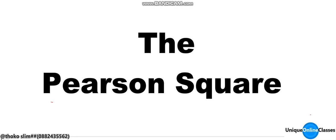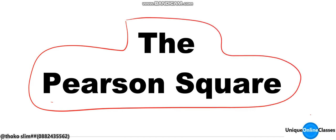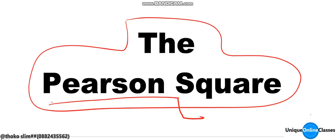In this video, we're going to focus on Pearson Square. Pearson Square is most often asked in Agriculture Practical — that's paper two by the Malawi National Examination Board. Pearson Square is a method which is used to formulate feed rations. So without wasting much of our time, let's see the example.